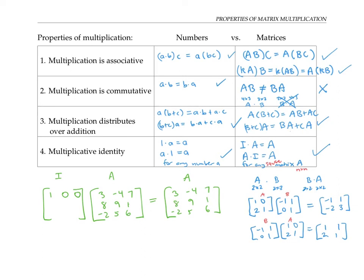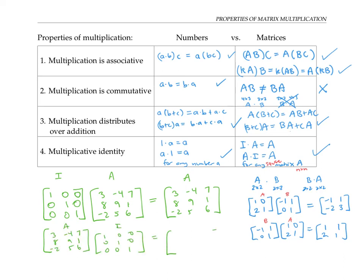Looking at the second row: when I take the second row of I and multiply by each column of A, I need to pick off eight, nine, and one respectively. I can do that by making the second row of I be 0, 1, 0. Finally, the third row of I needs to pick off the last three numbers, so the third row is 0, 0, 1. This is what the identity matrix needs to look like, and I can check that multiplying in the other order — A times I — also gives back the original matrix A. This works for any matrix A.